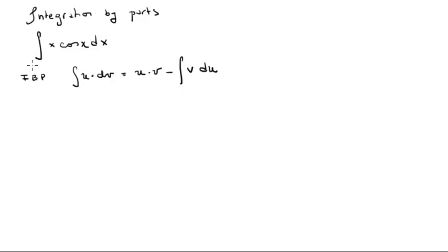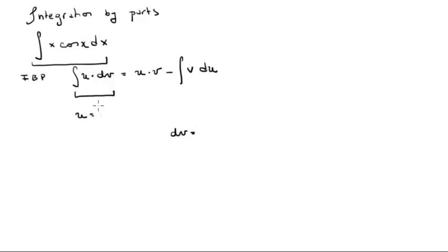So basically this x cosine of x, we have to transform it into that form. The trick is in deciding who's the u and who's the dv, and this is done by trial and error. If one doesn't work, then you just switch them up. For this example, let's say that u equals x and dv equals cosine of x dx.